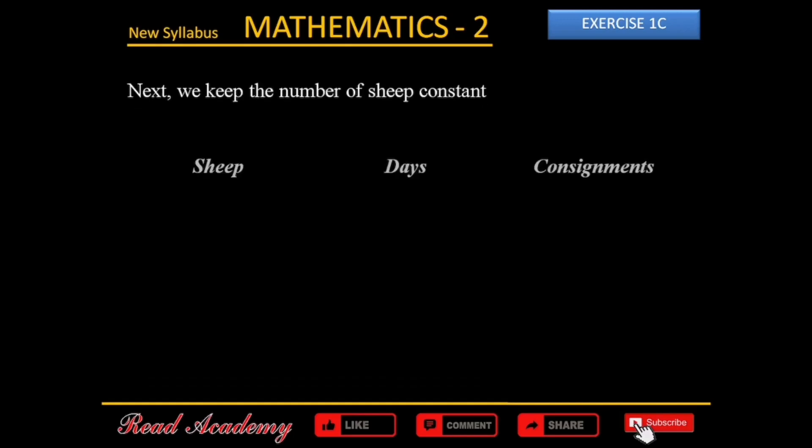In the next step, let us keep the number of sheep constant. In 20 days, 0.55 consignments of fodder can feed 550 sheep. In one day, less fodder is needed. We divide 0.55 by 20, which gives us 0.0275.